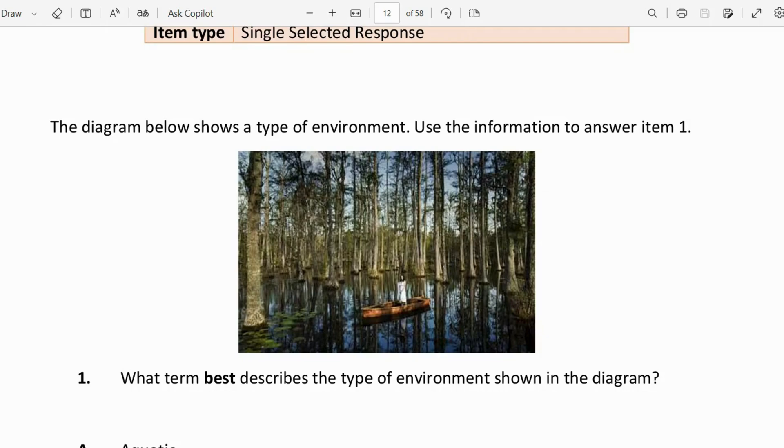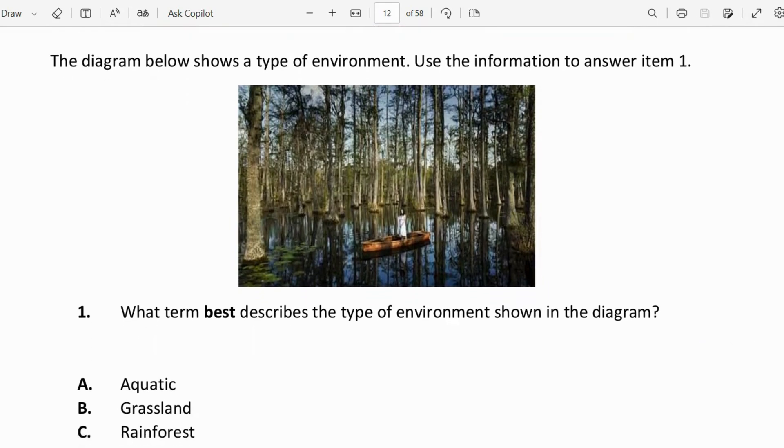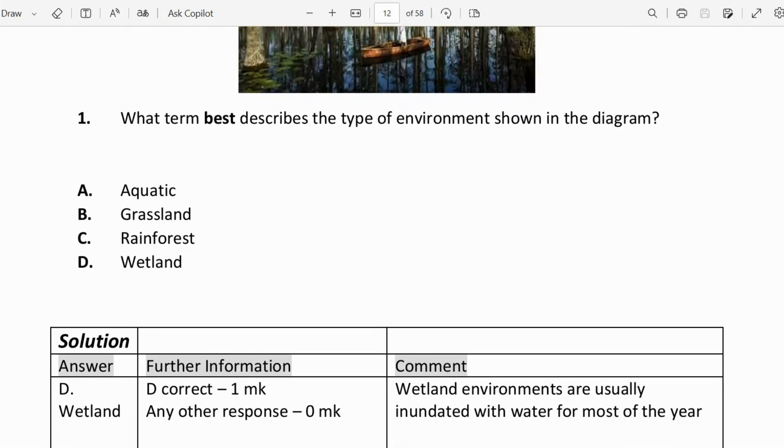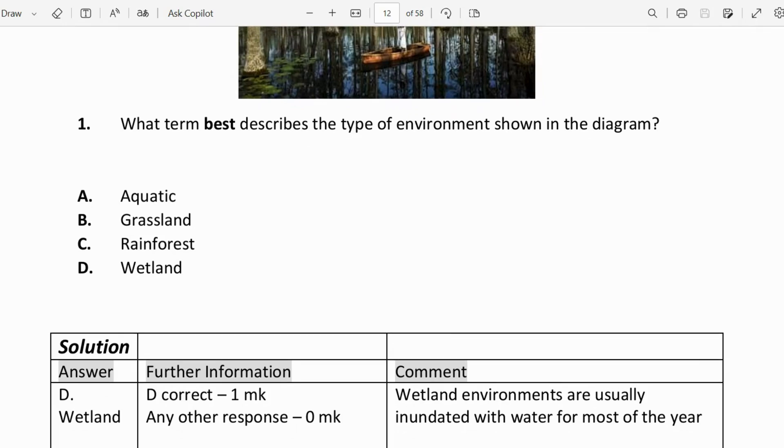Let's get straight into it because these examinations are right around the corner. The diagram below shows a type of environment. Use the information to answer item one. What term best describes the type of environment shown in the diagram? From the diagram we can see that it is neither grassland or rainforest. We can choose between aquatic and wetland. With aquatic environments, these environments are usually like seas and oceans and usually have salt water. With wetlands, these are inundated with water for most of the year and this is like a mangrove or morass. So the correct answer would have been wetland.